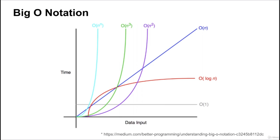Before we get into the specifics about algorithms, let me introduce Big O notation. Big O notation is used to classify algorithms according to how much time it takes to run compared to the data input — it describes the performance or complexity of an algorithm. On the x-axis we have data input, and on the y-axis we have time. O(1), sometimes called order 1 or Big O(1), means that even if data input increases, time does not change — time is constant. Typical examples of these are arrays.